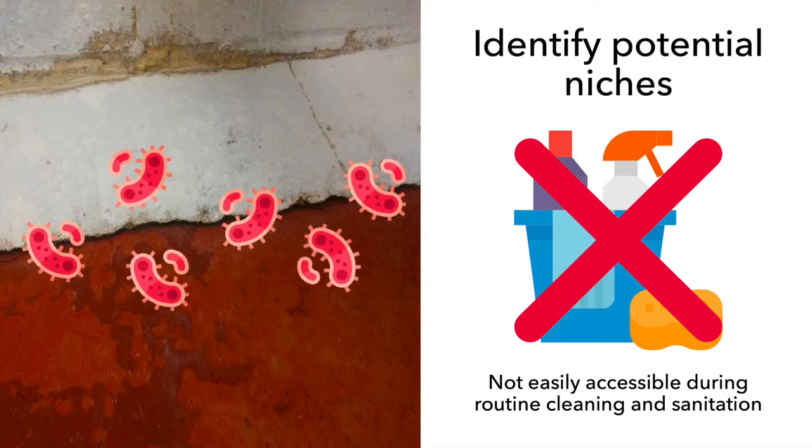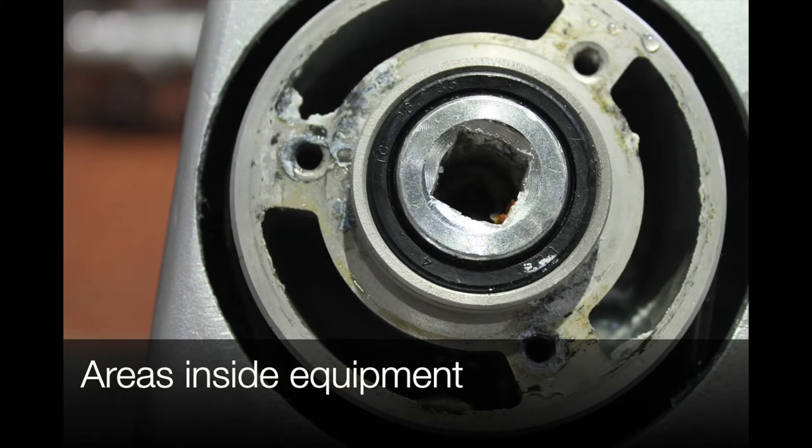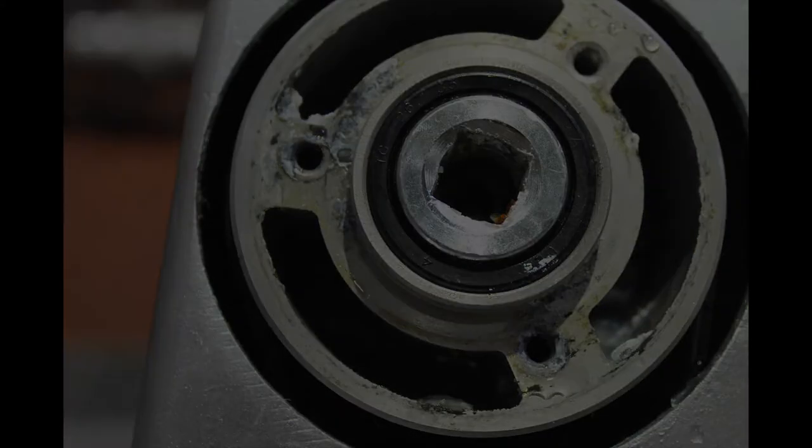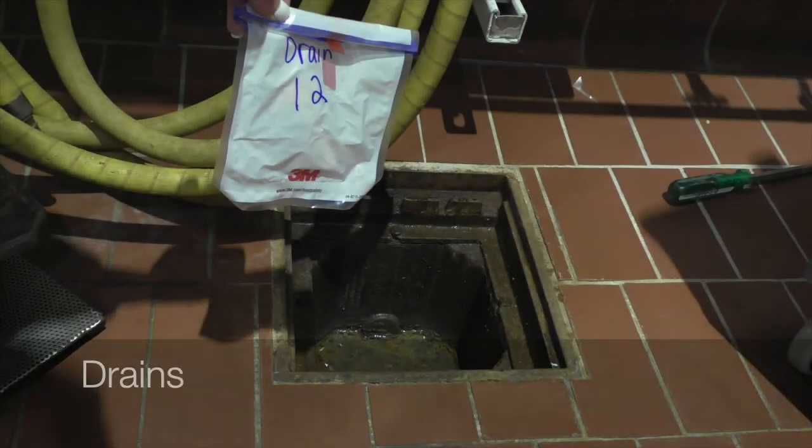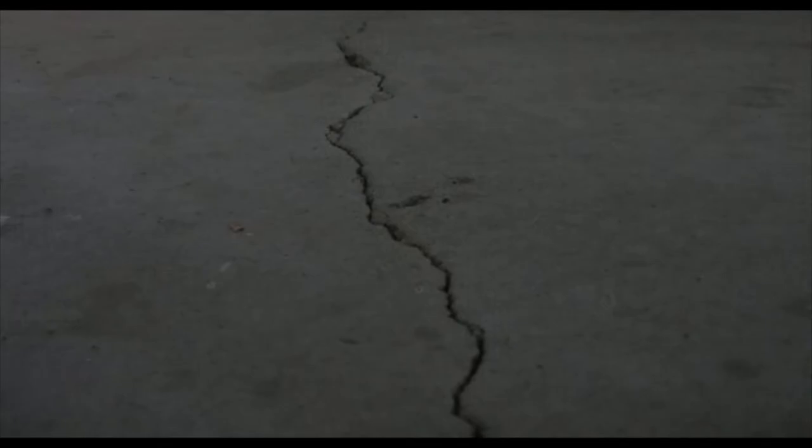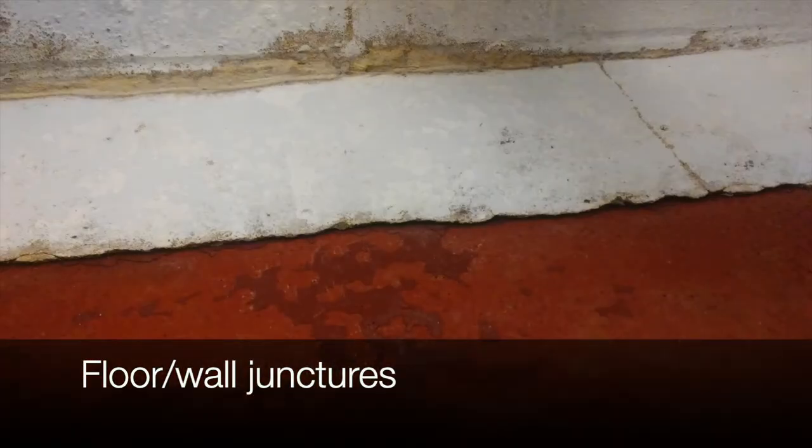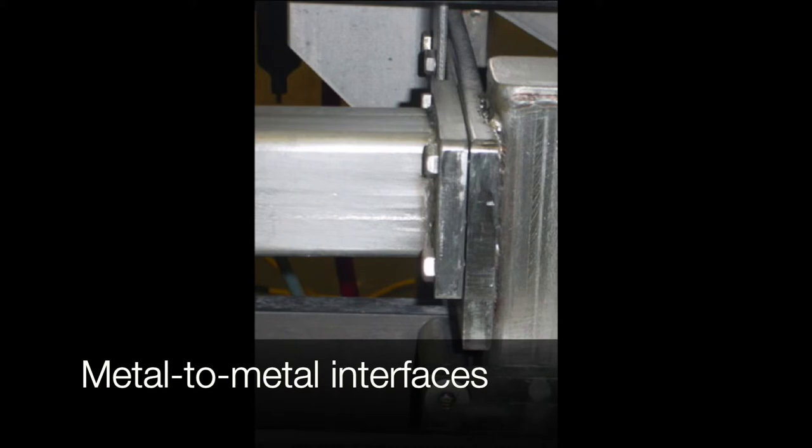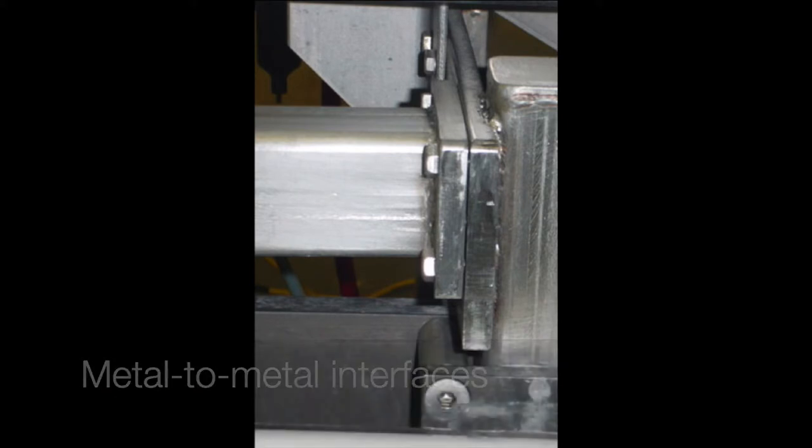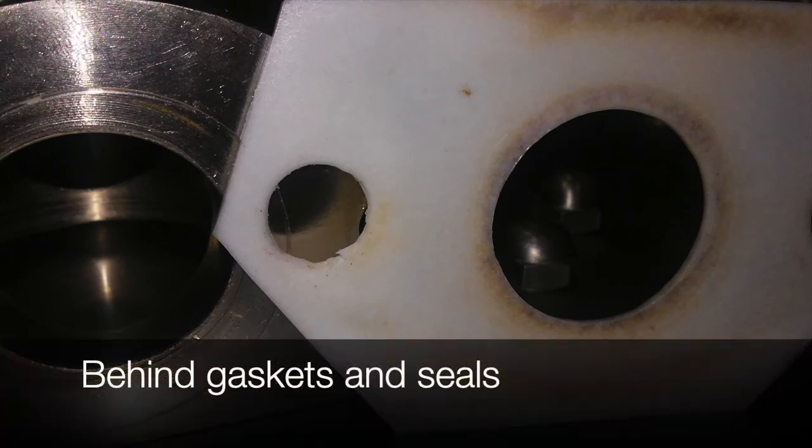Consider and look for areas that are hard to reach and rarely cleaned, which may harbor moisture and food residue. Microbial niches may include areas inside equipment, inside hollow rollers, drains and frames, cracks in the floor, cracks and crevices at the floor-wall junction, spaces between metal-to-metal and plastic-to-plastic or plastic-to-metal interfaces, and behind gaskets and seals.